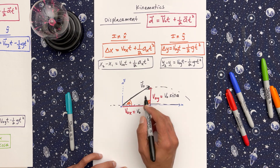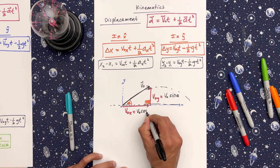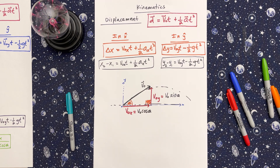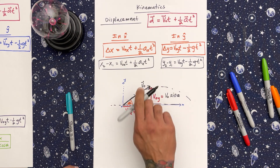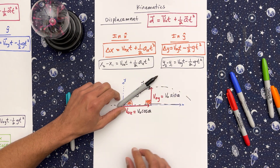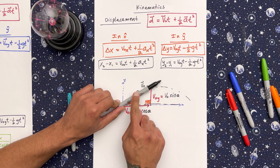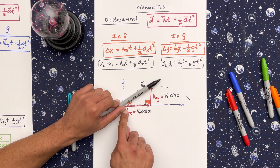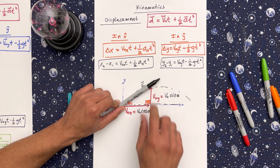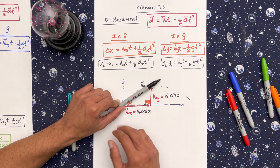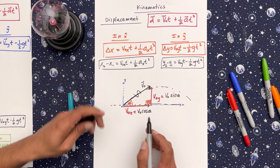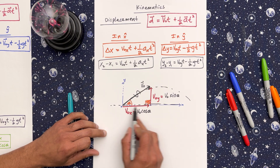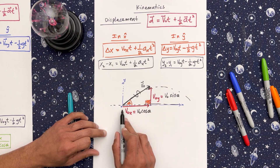For the bottom (x) component, adjacent over hypotenuse is cosine, so velocity initial in x equals velocity initial times cosine theta. Now we've broken the velocity vector into an x and a y component, which is more precise and tells us exactly how the parabolic shape will form. We no longer need the original diagonal vector — it's now fully represented as velocity initial in x and velocity initial in y.